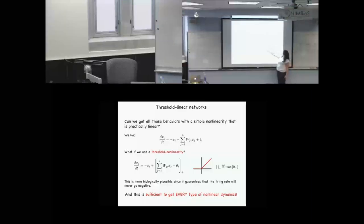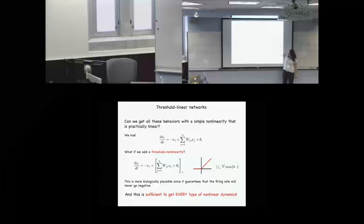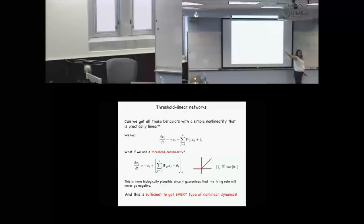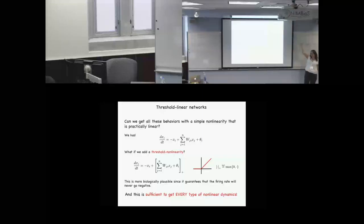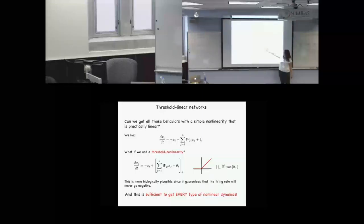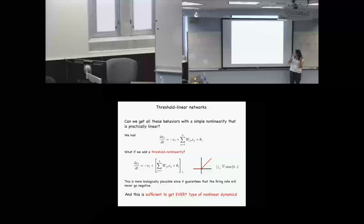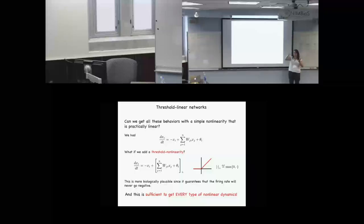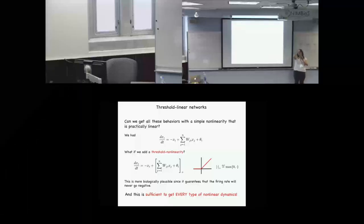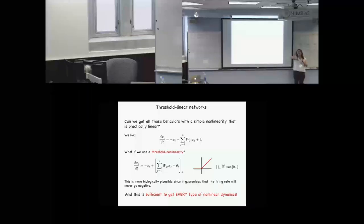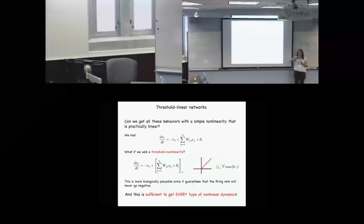This is also called rectified linear units in the deep learning context, as mentioned yesterday — it's become the most popular nonlinearity used there. In deep learning, though, those are restricted to feedforward networks, where all edges go from one layer to the next. In our context, we're thinking within a single layer and having connections in any possible direction, so you could end up with loops or cycles in your graph.